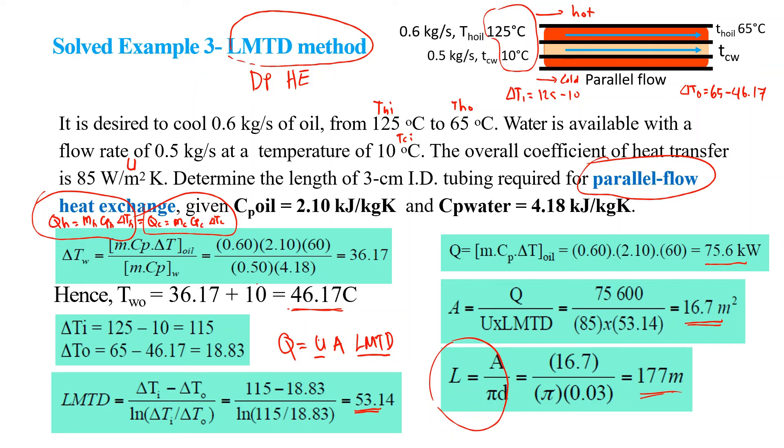The key thing to highlight from this problem is that double pipe heat exchanger for large scale process is not really practical in terms of the required space. What can be done is we can make a lot of passes by bending the pipes, but then still the investment cost in terms of the material will be huge. That is the disadvantage of this type of heat exchanger.